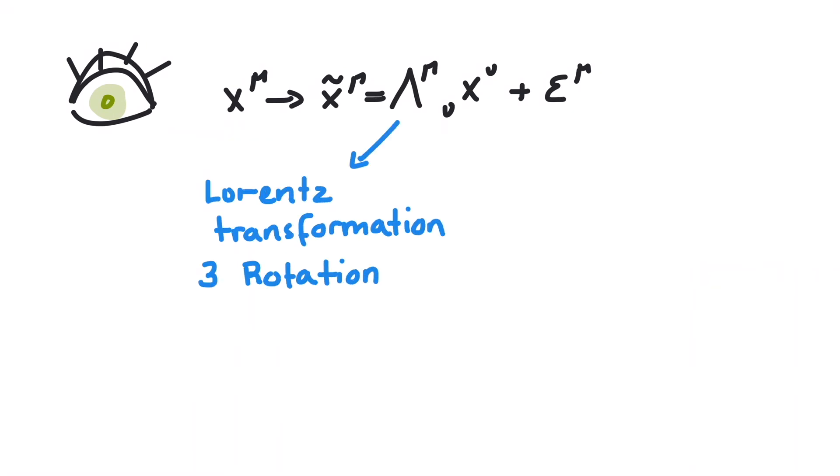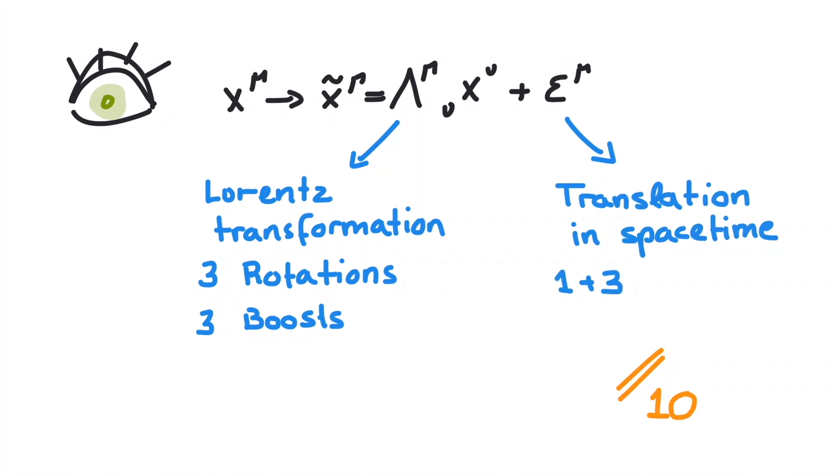In the low-energy regime that we live in, we observe 10 continuous symmetries, which are connected to the 10 generators of the Poincare group. This includes Lorentz transformations, as well as translation in spacetime. So we are looking for 10 conservation laws now.